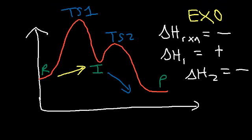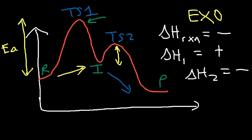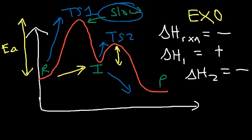Which step is the slow step, or rate-determining step? Notice that the first step has a higher activation energy than the second step — the first transition state is higher than the second transition state. Because it's harder to climb that energy mountain, the first step is the slow step. It takes longer to get through TS1; TS2 is easy to pass through because it's not as high in energy. The transition state with the highest energy is associated with the slow step.